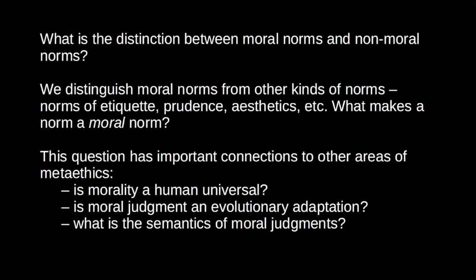Our answer to this question will influence our assessment of evolutionary debunking arguments in meta-ethics. Until we can specify what counts as a moral norm, it's not clear how to interpret variation in norms across cultures. More broadly, philosophers are interested in the semantics of moral judgments — what exactly do moral judgments mean? Do moral judgments express propositions that can be true or false, or are they expressions of non-cognitive states like desires or emotions? When I say slavery is wrong, am I attributing the property of wrongness to slavery, or am I just expressing something more like 'boo to slavery'? To answer this, we need to know which judgments count as the moral judgments.